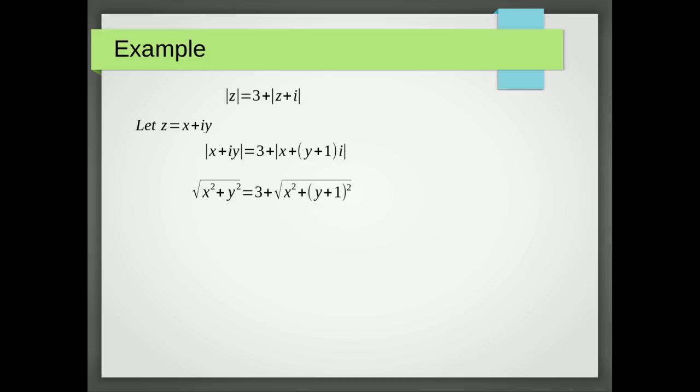We want to square both sides now to get rid of the square roots. I prefer to do it when I've got my constant with the smaller of the two sides. So I'm going to take away three from both sides. I'm then going to square both sides.